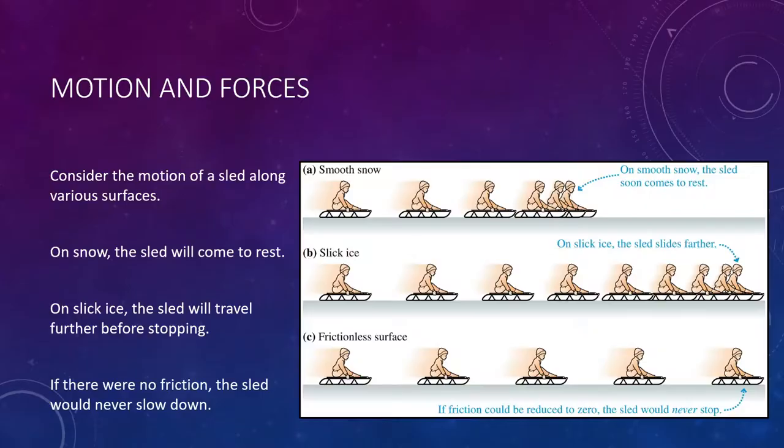So let's start with the basics. Consider a sled that is moving along various surfaces. Let's say at first, the sled is moving along snow. Maybe not all of us have experience sledding on snow, but you can imagine that if someone pushes the sled and lets go, the sled will move, but slow down and come to a stop.